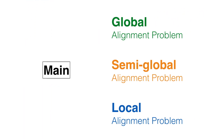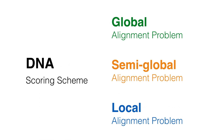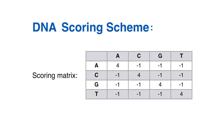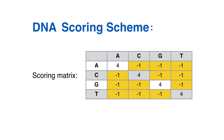Before defining the global, semi-global, and local alignment problems, let's fix the DNA alignment scoring scheme that we will use in all the illustrations in this module. The scoring matrix rewards a match with four points and penalizes a mismatch by taking one point from the score, as defined by the scoring matrix. Each gap insertion is also penalized by taking one point from the score.